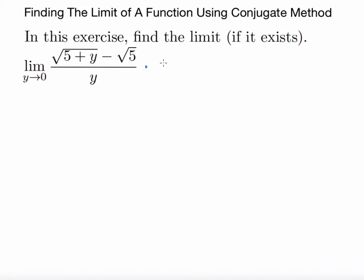The conjugate method says that you multiply your original expression by its conjugate, or at least the conjugate that has the radical part of it.